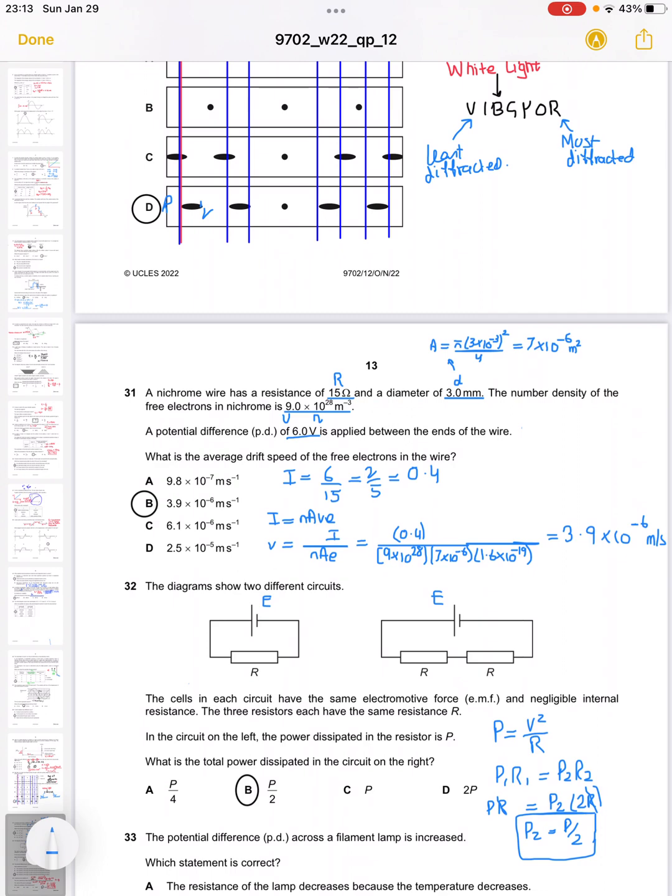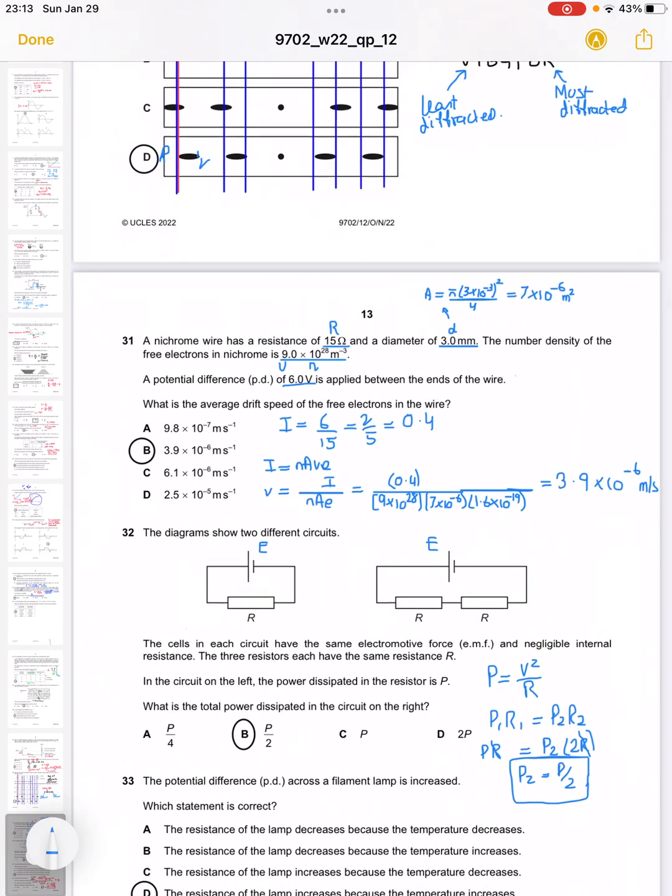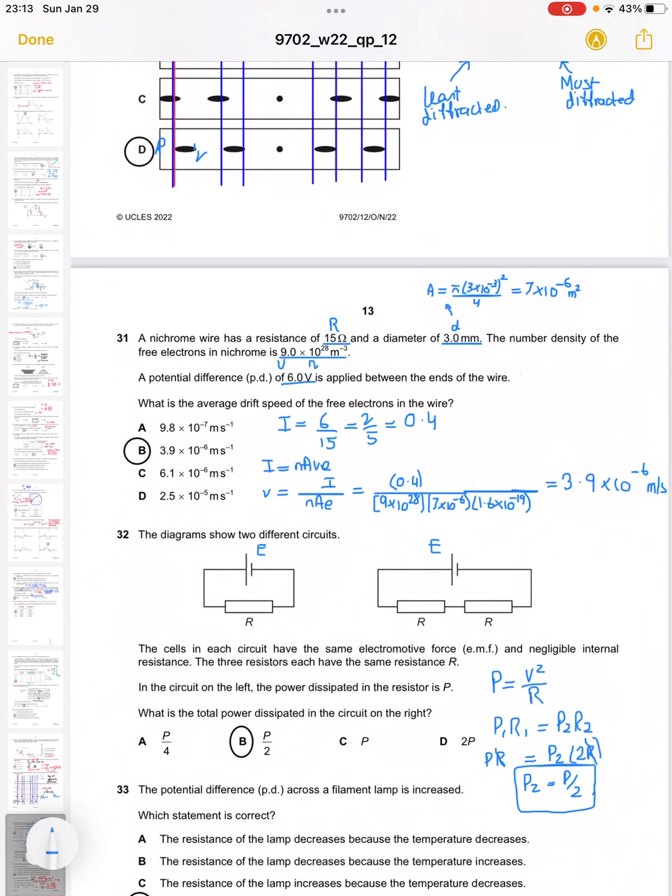To find the current, I equals V over R. Voltage is 6, 6 over 15 is 0.4, so 0.4 is the current. Applying I equals nAve gives us velocity is current over nAe. Plugging in the values gives us 3.9 into 10 to the power minus 6, which is B.